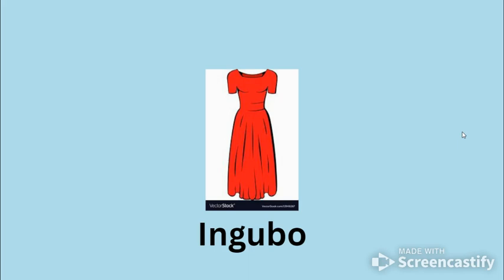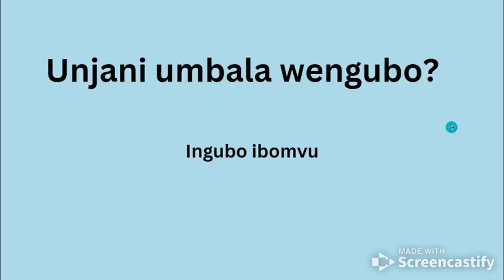The color that we can see now is red, and that is a dress — ingubo, we see a dress, ingubo. Unjani umbala wengubo? What is the color of the dress? Ingubo — the dress is red.